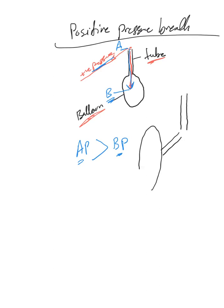We just talked about spontaneous breath, how it happens and the sequence of events. The same idea we applied at the balloon we can apply here. Instead of making a spontaneous breath where pressure at B is less than A, why don't we reverse it?